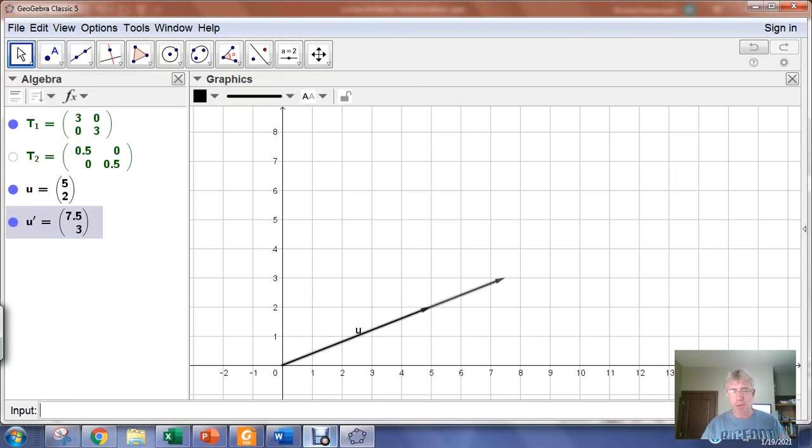When we multiply by a positive scalar, we're either making the vector larger or smaller than it originally was, unless R equals 1, and then we would just be maintaining the size of the vector. It would be equivalent to multiplying by the identity matrix.